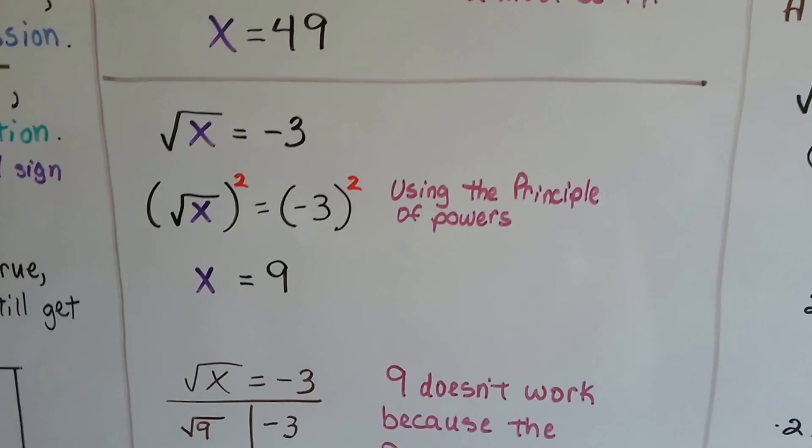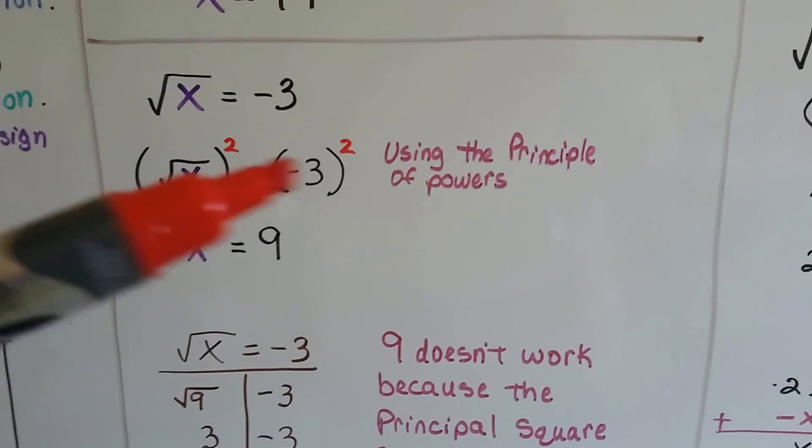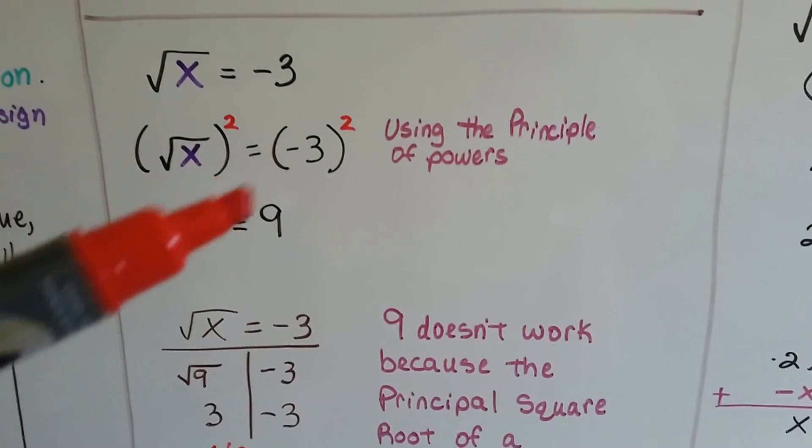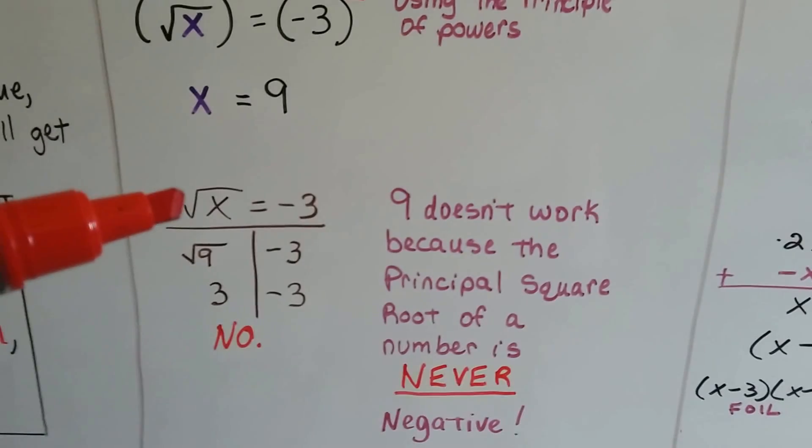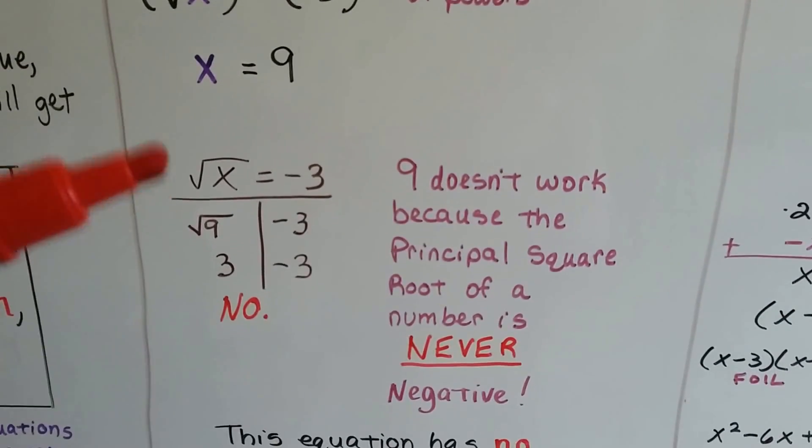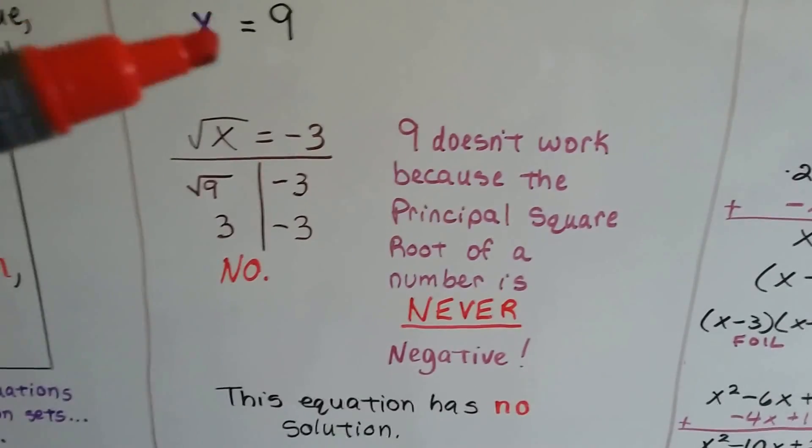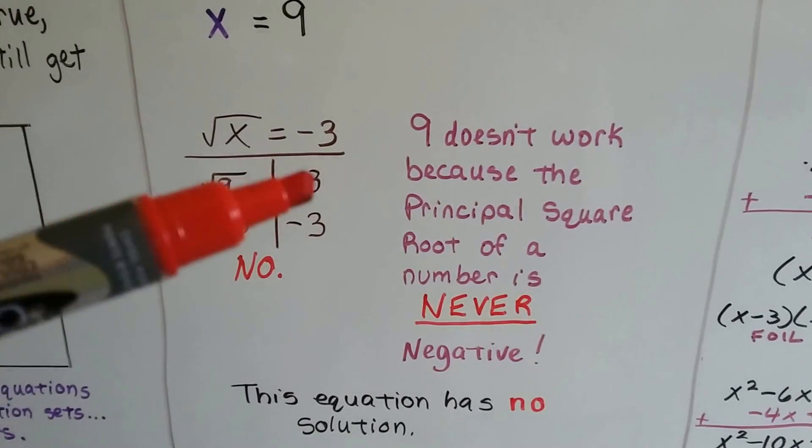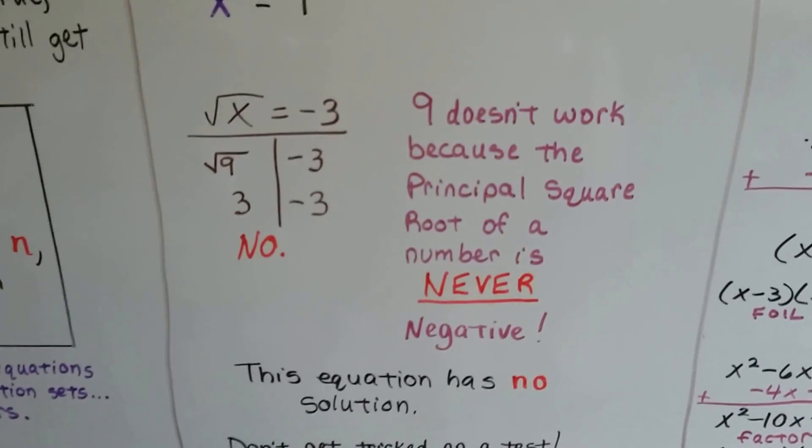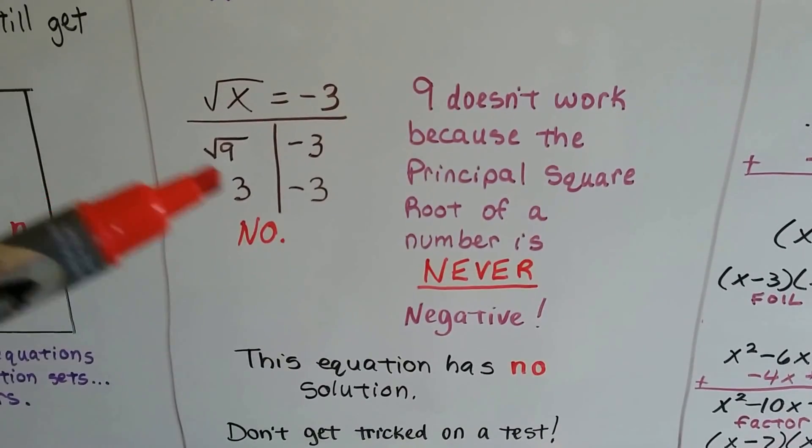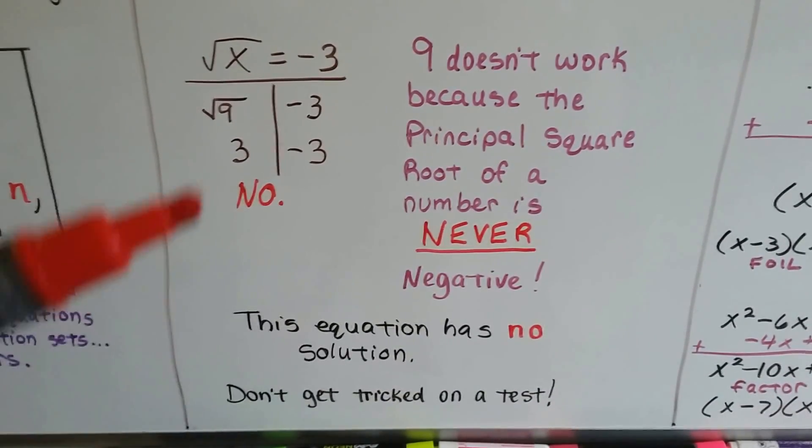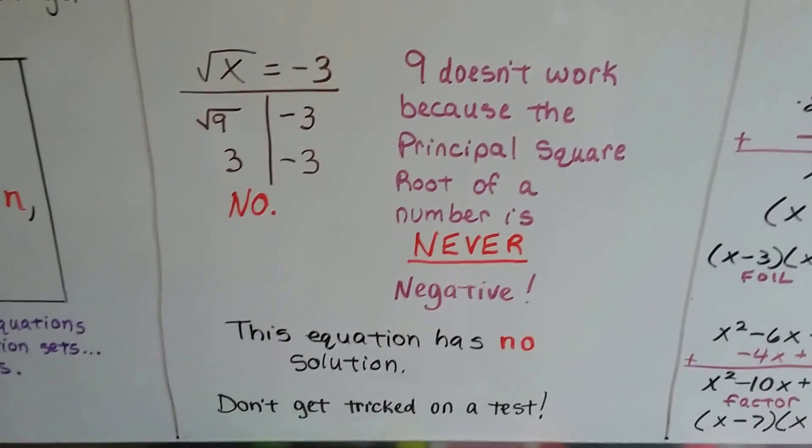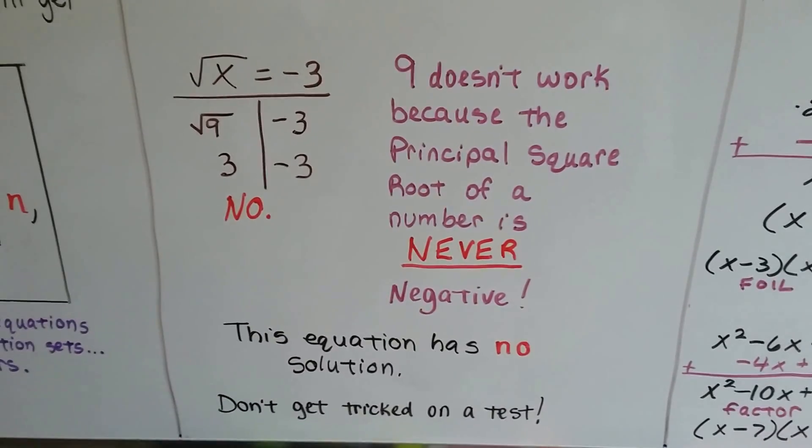We've got the square root of x equals a negative 3. Using that principle of powers rule, we can square both sides of the equal sign. That'll remove the radical sign from this x, and that'll give us a negative 3 times negative 3, which gives us a positive 9. We can check it, which is really important. I know a lot of people want to skip this, but this is what's going to screw you up on tests. Because if you don't check it, you're going to think, okay, I got the right answer. I got a 9. But when we plug this back into the square root of x equals negative 3, that means the square root of 9 is a negative 3. And nope, 9 doesn't work because the principal square root of a number is never negative. So this equation has no solution. And don't get tricked on a test. Make sure you check it because you cannot have a negative as a principal square root.